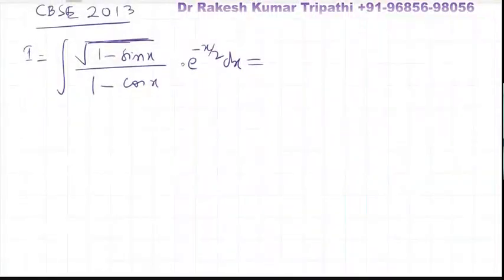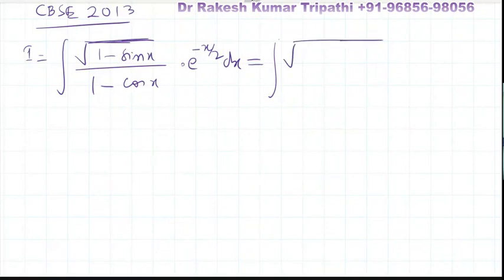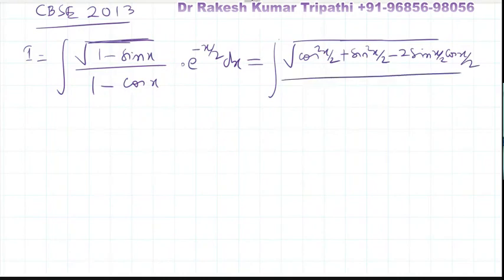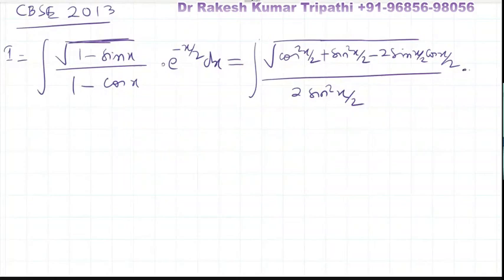We want to integrate the integral I = √((1 - sin x)/(1 - cos x)) · e^(-x/2) dx. The numerator 1 - sin x can be written as cos²(x/2) - sin²(x/2) + sin²(x/2) - 2·sin(x/2)·cos(x/2), and the denominator 1 - cos x equals 2·sin²(x/2).